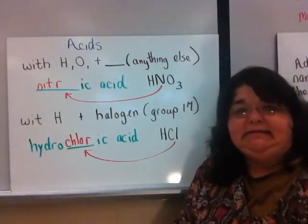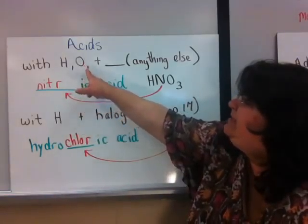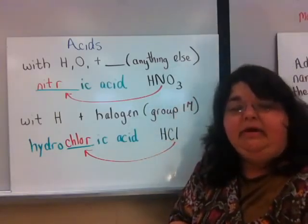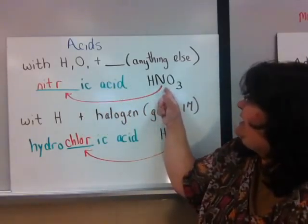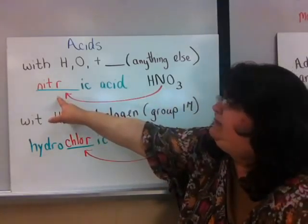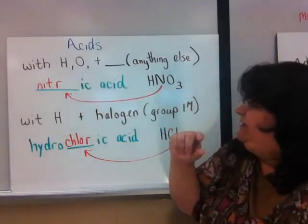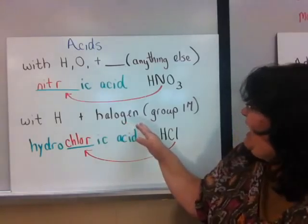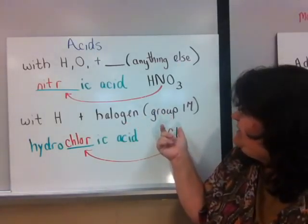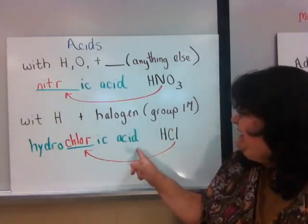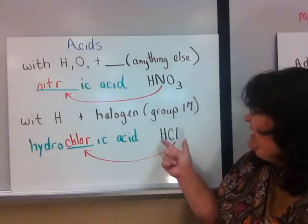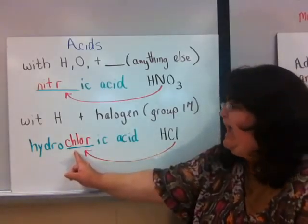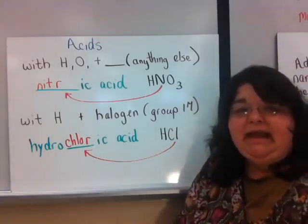There are two different kinds of acids we will look at. The first type is when you have hydrogen combined with oxygen plus something else, like HNO3. To name this type, take the beginning of the 'something else,' place it in the blank, and add '-ic acid.' So HNO3 is nitric acid. If you have a hydrogen with a halogen from Group 17, the format is 'hydro-[stem]-ic acid.' For HCl, take the beginning of chlorine, 'chlor,' giving us hydrochloric acid.